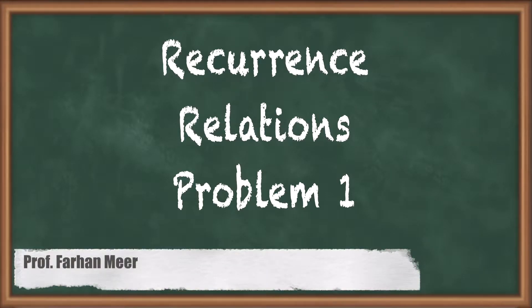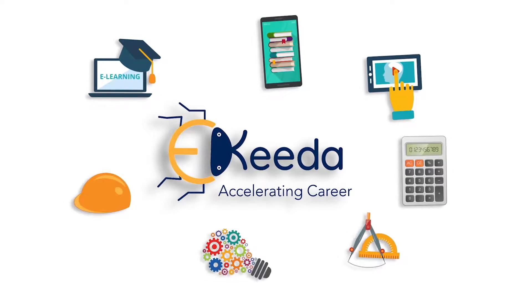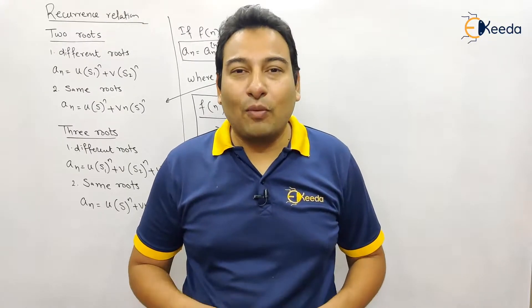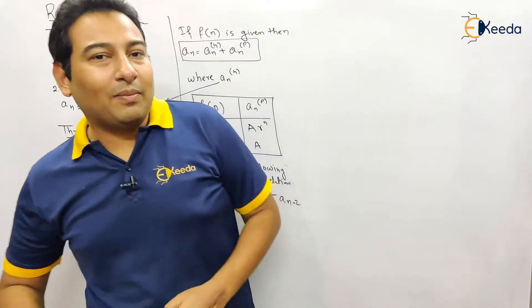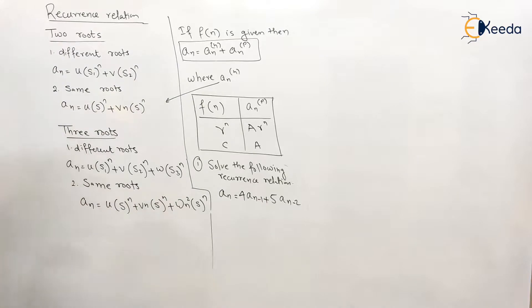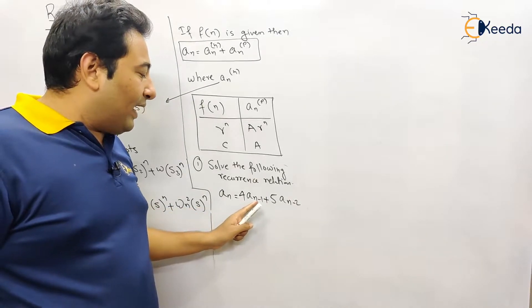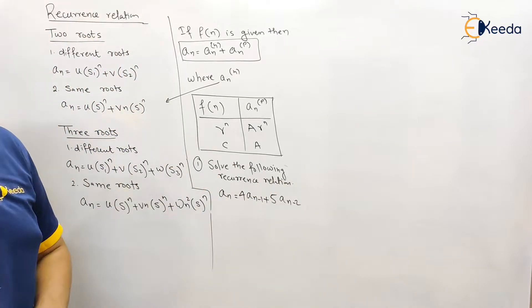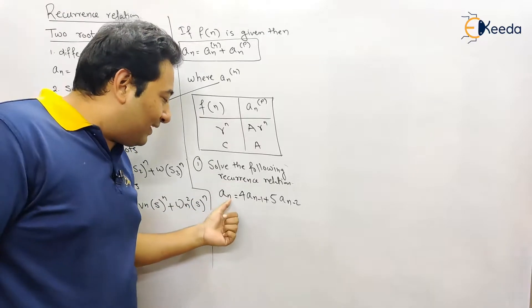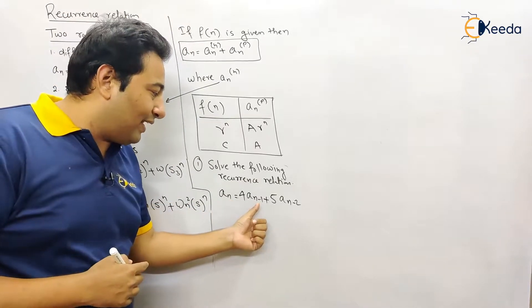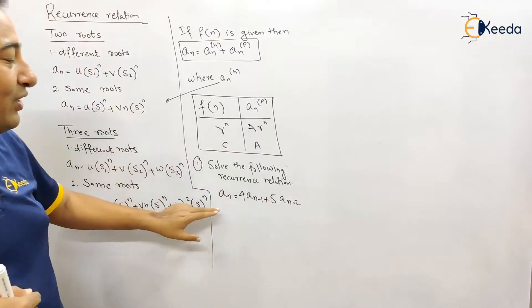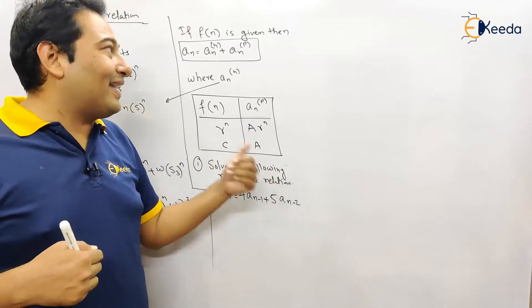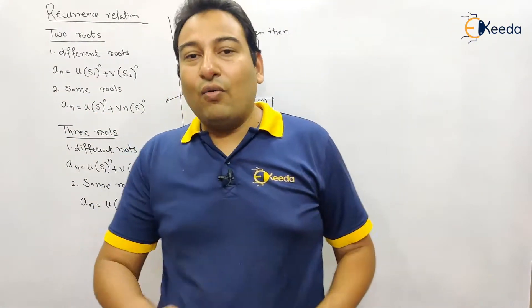Hello friends, in this video we'll be discussing recurrence relation problem number one. We are starting with the new topic: recurrence relations. A recurrence relation is given as a_n = 4·a_(n-1) + 5·a_(n-2). This is called a recurrence relation or recursive function because a_n is represented using the same function a_n but with past values n-1 and n-2. That is why it is called a recurrence relation.